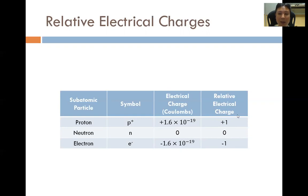And hence, the relative electrical charges of the proton, neutron, and electron can be said to be plus one, zero, and minus one respectively. And it is this column that is required knowledge from the JCH2 chemistry syllabus.